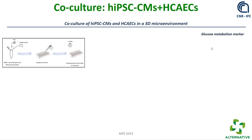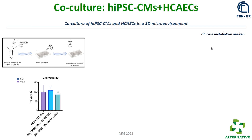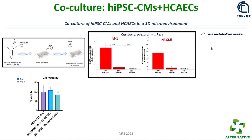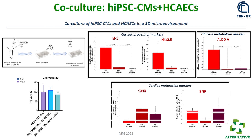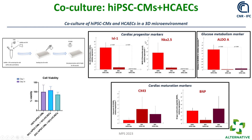We then moved to the 3D environment, seeding cells in GelMA and observing viability at different ratios. In particular, we observed modulation of specific gene markers. We tested cardiac progenitor markers, which should decrease as cardiomyocytes mature. We also observed the metabolic marker Aldolase A — in maturing cardiomyocytes, the glucose pathway is progressively lost in favor of the fatty acid pathway. Finally, cardiac maturation markers like CX43 and BNP are much more present in co-culture compared to single culture.